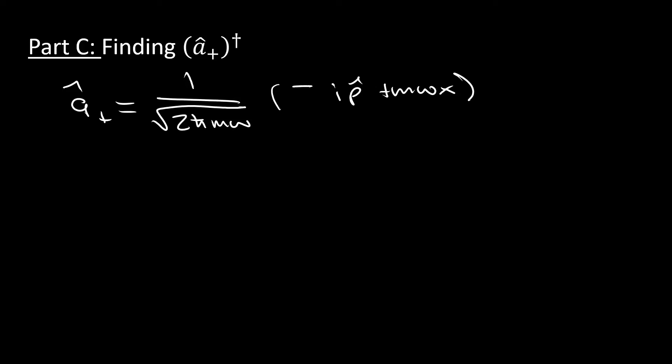We treated them like complex numbers. We took the complex conjugate of those. And we can do the same exact thing here. This is a complex number. To find the Hermitian conjugate, we can just take the complex conjugate. So a hat plus dagger, the Hermitian conjugate of the raising operator, is just 1 over the square root of 2 h bar m omega i p hat plus m omega x. All we're doing is just changing the sign of the imaginary part.